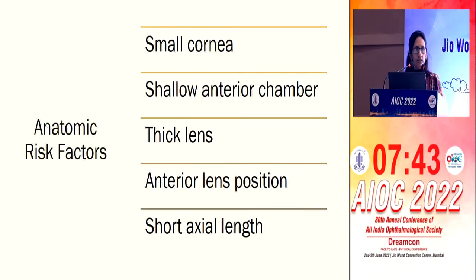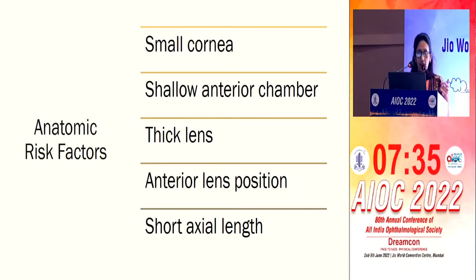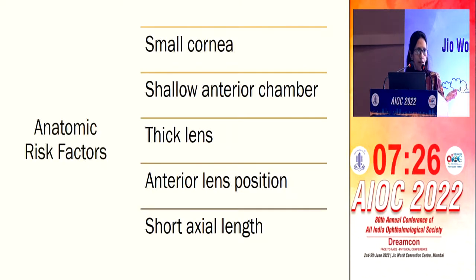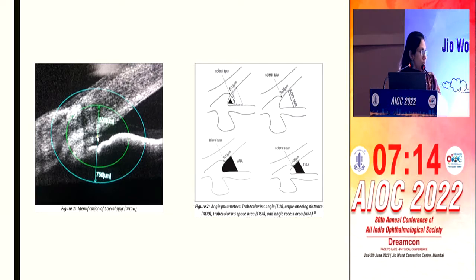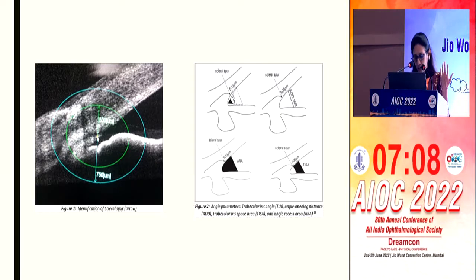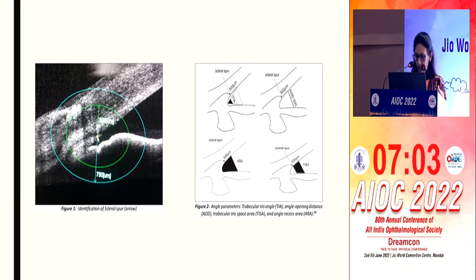What are the anatomic risk factors? Traditionally: small cornea, shallow anterior chamber, thick lens, anterior lens position, and short axial length — all predispose to angle closure. However, not everybody develops it; even nanophthalmic eyes don't always develop angle closure. ASOCT gives us measurements that identify patients at higher risk of developing angle closure.